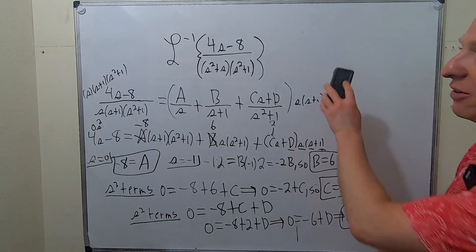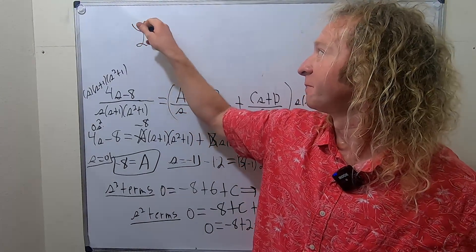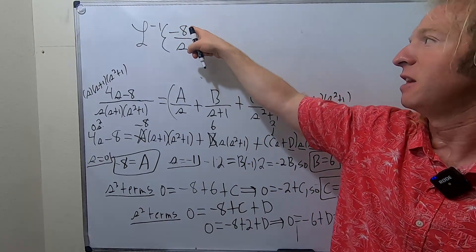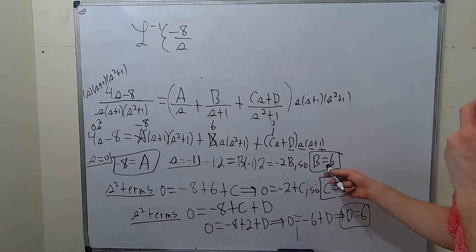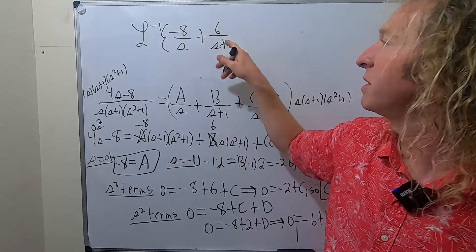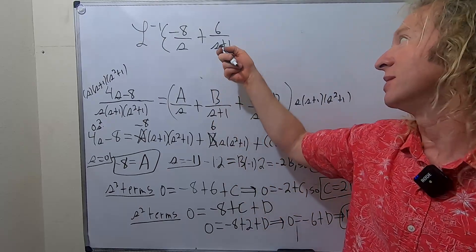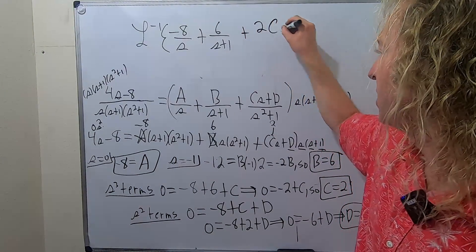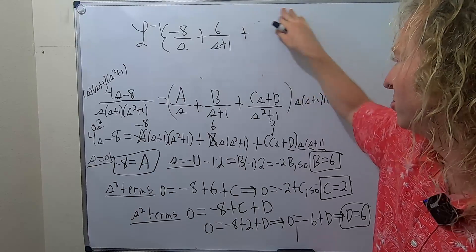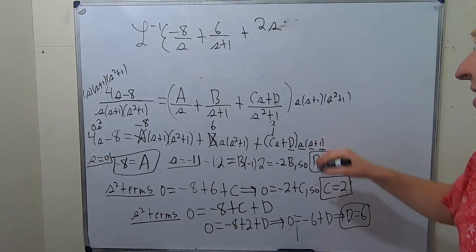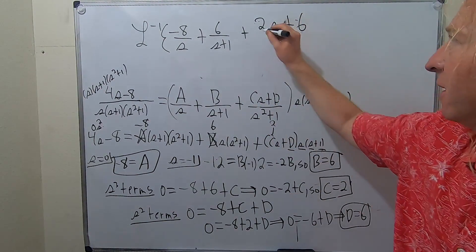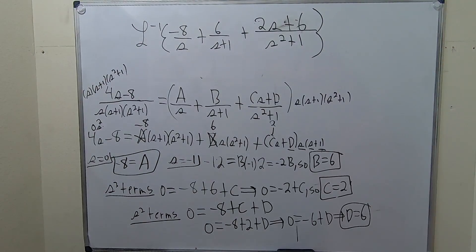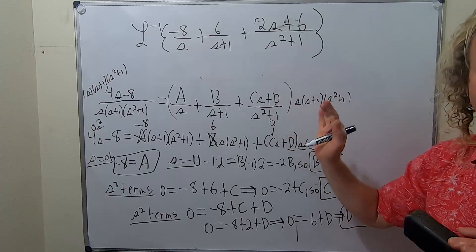Now we plug everything in and take the inverse Laplace. So we have the inverse Laplace of: negative 8 over s, plus 6 over s plus 1, plus 2s plus 6 over s squared plus 1. We need to carefully break this up into separate pieces — pull out the negative 8, plus 6, plus 2 times s over s squared plus 1, plus 6 times 1 over s squared plus 1.